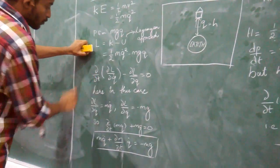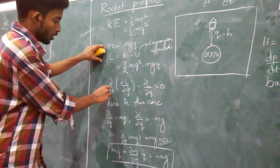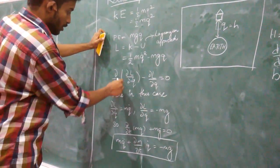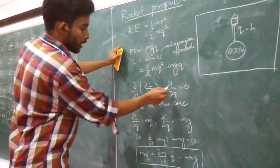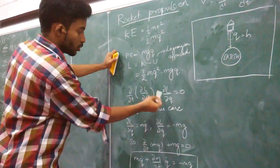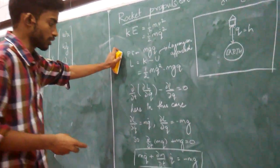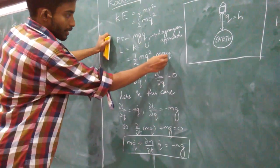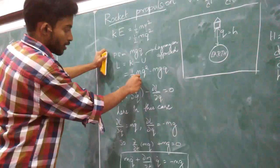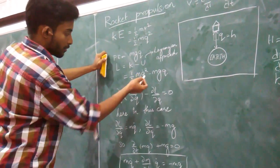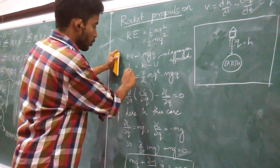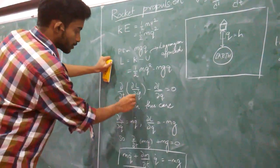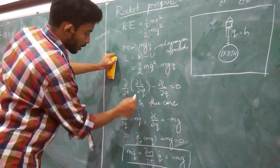We know the Lagrange equation is: d/dt(∂L/∂q̇) - ∂L/∂q = 0. From the Lagrangian, ∂L/∂q̇ = mq̇, since the 2's cancel on differentiating with respect to q̇. And ∂L/∂q = -mg, since the first term cancels. Substituting these values gives: d/dt(mq̇) + mg = 0.